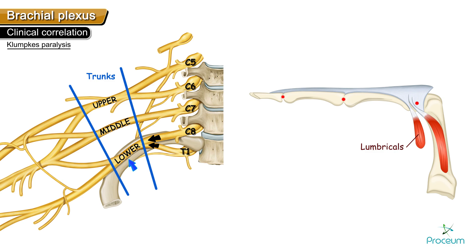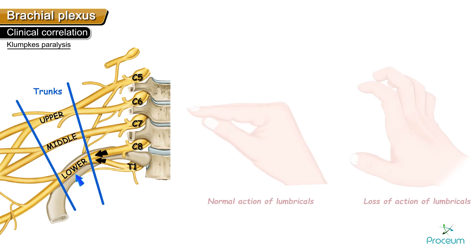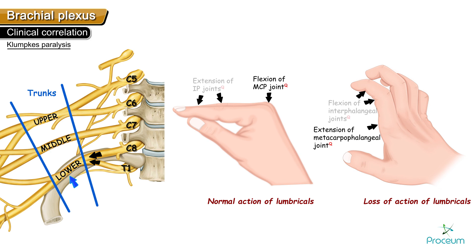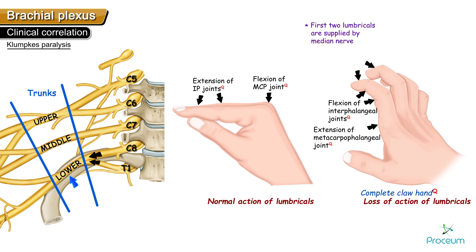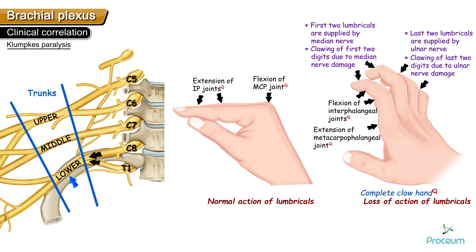The C8 and T1 fibers supply intrinsic muscles of the hand like the lumbricals and interossei. The normal function of lumbricals is flexion of the metacarpophalangeal joints and extension of the interphalangeal joints. Loss of these intrinsic muscles leads to extension of the MCP joints and flexion of the IP joints — called complete claw hand. The first two lumbricals are supplied by the median nerve (clawing of digits 1–2 indicates median nerve injury), and the last two by the ulnar nerve (clawing of digits 4–5 indicates ulnar nerve damage). Complete claw hand suggests Klumpke's paralysis.